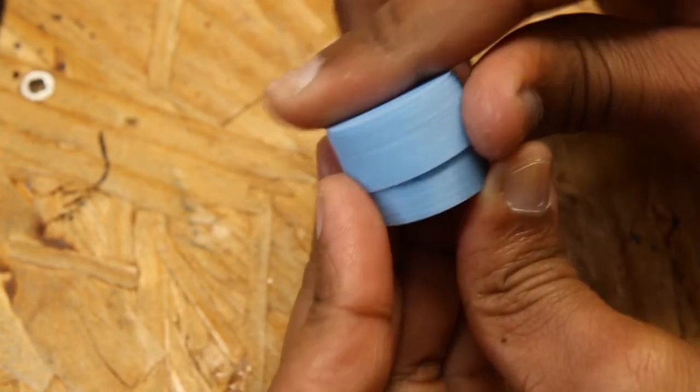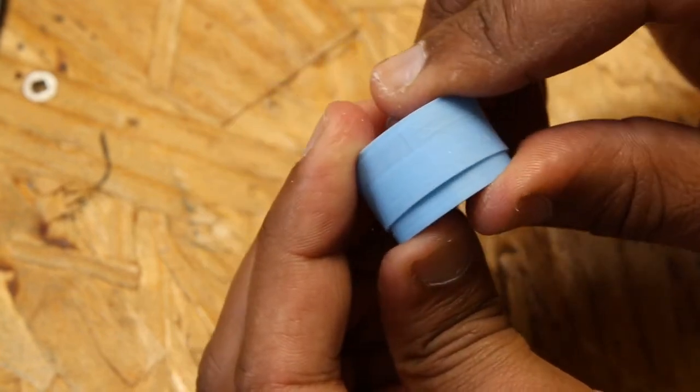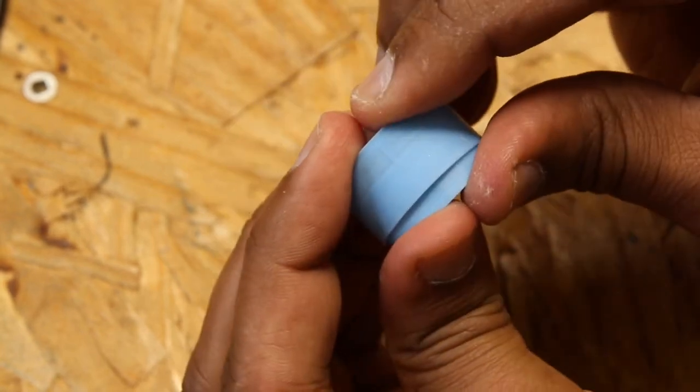Now to attach the cover, we're simply going to align those two slots and then just apply a little bit of pressure and it should snap right into place.